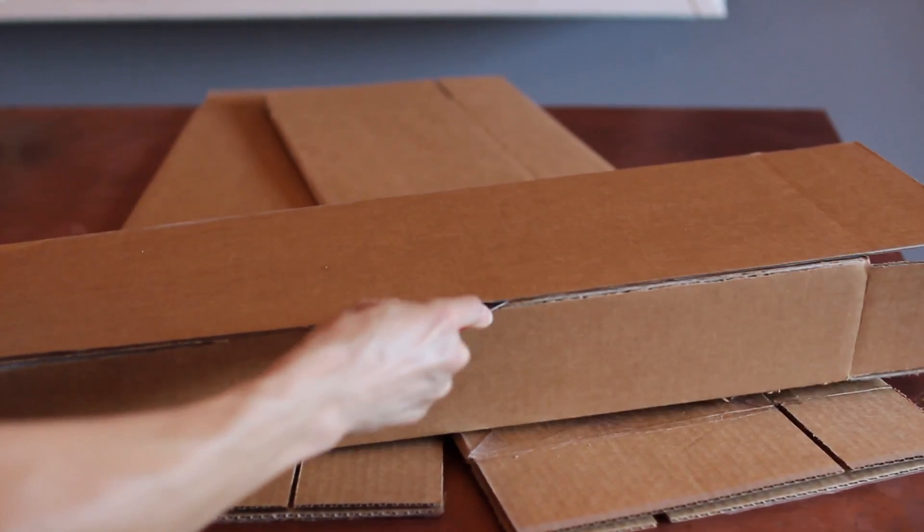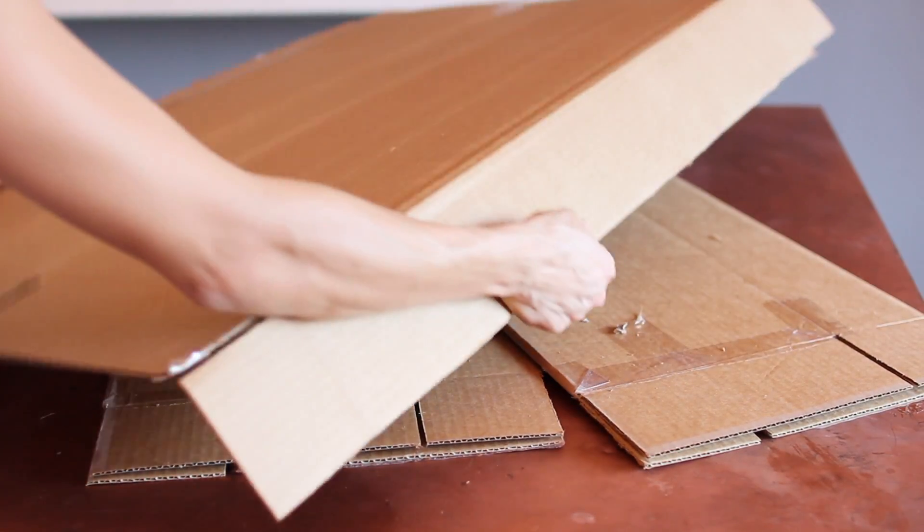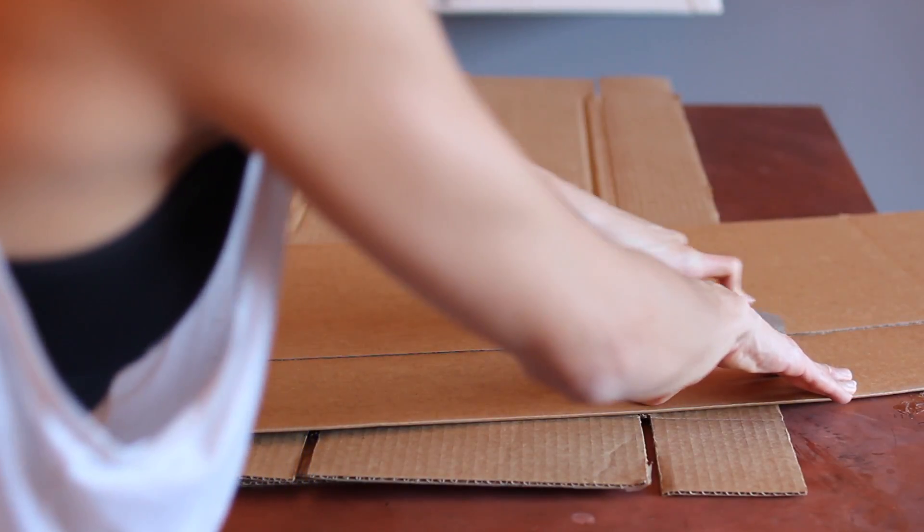You can definitely buy poster board if you want to, but I just cut open and laid the cardboard box flat so I had a larger surface to work with so I can make larger letters for our front door.